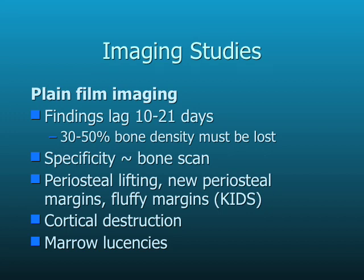Let's talk about imaging studies and what they mean. For plain films, you can expect findings consistent with osteomyelitis to appear within 10 to 21 days — there is a lag. At least 30% of bone density has to be lost for a plain film to be positive. The specificity is about the same as bone scan. In children, you'll see periosteal lifting, but not necessarily in adults. You'll see cortical destruction and marrow lucencies.